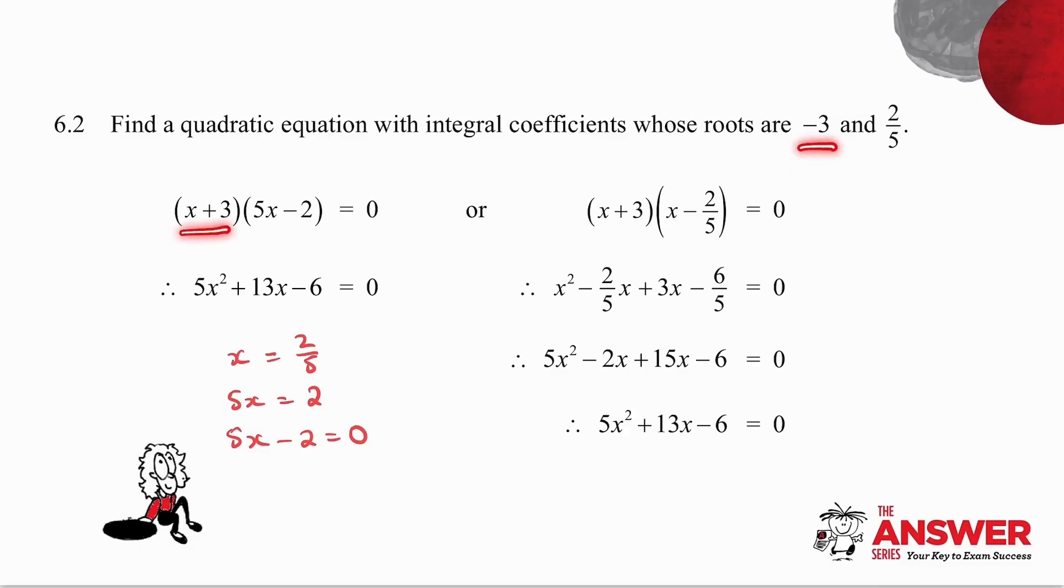So the minus three comes from that bracket and the two over five comes from this bracket. And all I now need to do is multiply the two brackets together and you get your quadratic equation with integral coefficients.